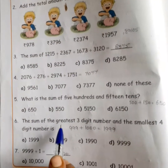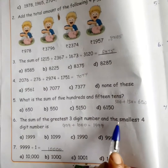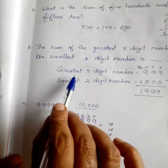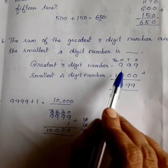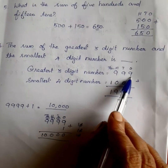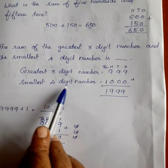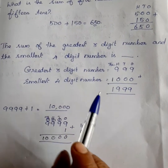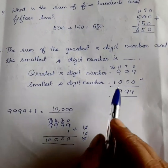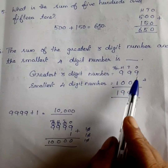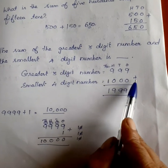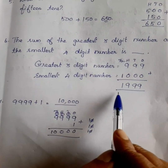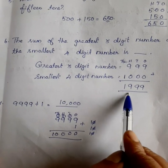The sum of the greatest 3-digit number and the smallest 4-digit number. The greatest 3-digit number is 999. The smallest 4-digit number is 1,000. So, total: 9 plus 0 is 9. 9 plus 0 is 9. 9 plus 0 is 9. Then 1. So, answer: 1,999.